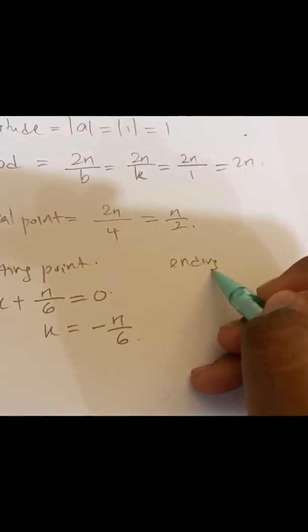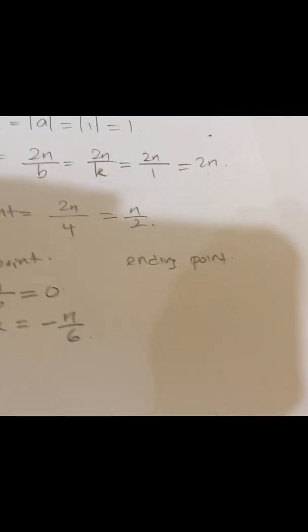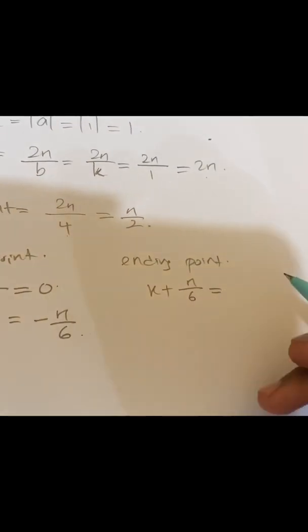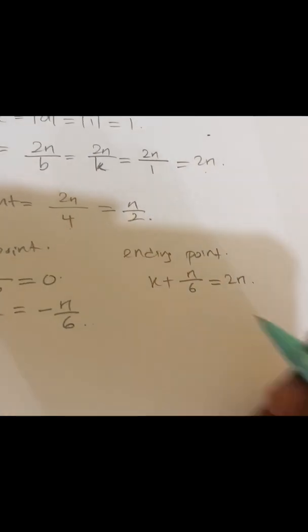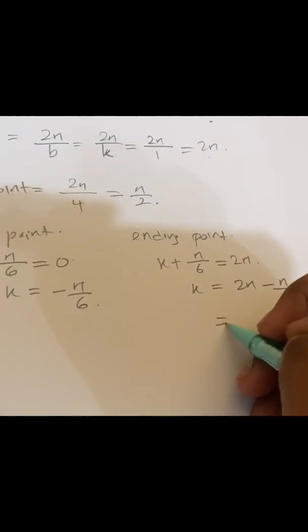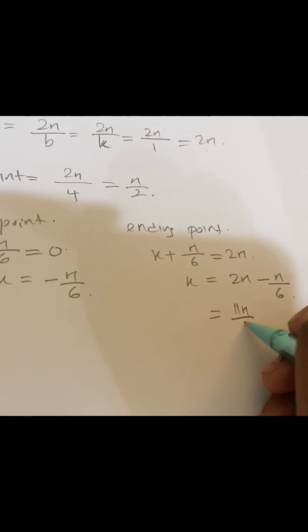And for the ending one, I don't mind writing x plus π over 6 equals to 2π. So the ending is 2π minus π over 6, which equals to 11π over 6.